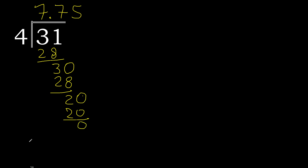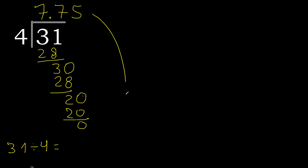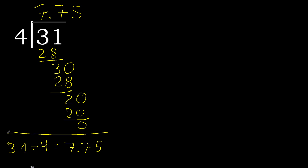0, therefore finish. 31 divided by 4 is — finish.